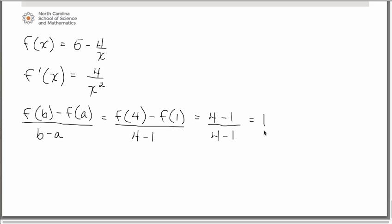So remember what the mean value theorem tells us. It tells us that there should be a c value at which the derivative at that c value, so all I did was substitute c in place of my x in the derivative, should equal the slope of the secant line connecting the endpoints. So we have 4 over c squared equals 1 to solve. And if you go ahead and solve that, you'll find that c is equal to plus or minus 2.